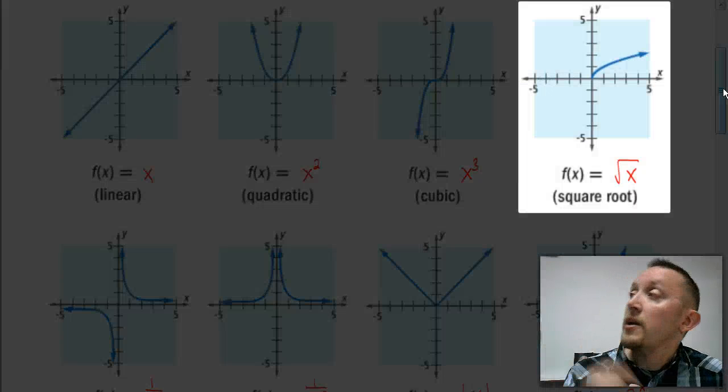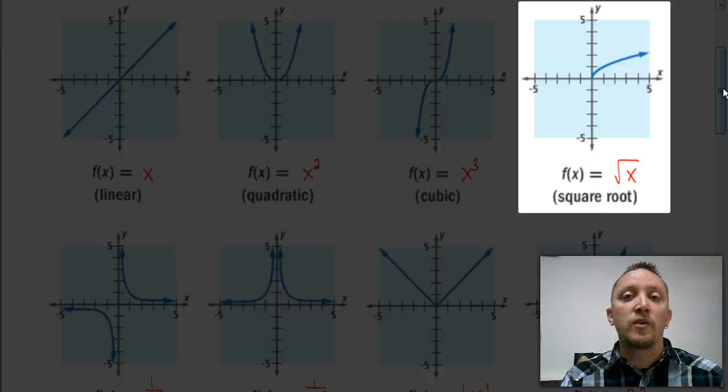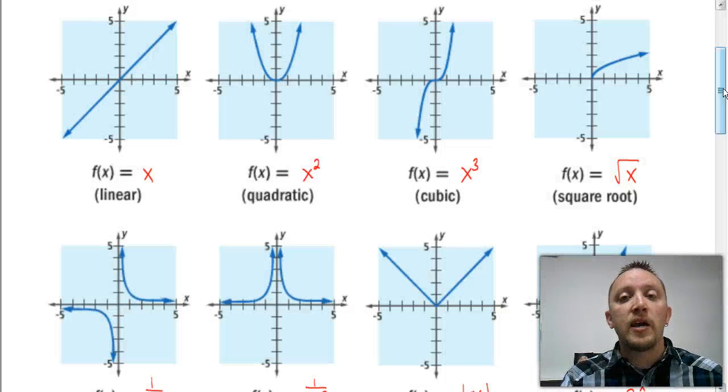And then moving on here, we have our square root function. Our square root function is in the form f(x) = √x. So these are our first four parent functions. Let's take a look now at our other four.